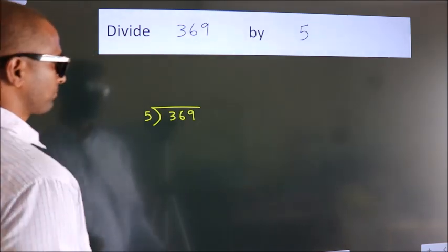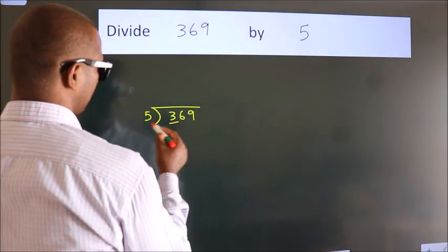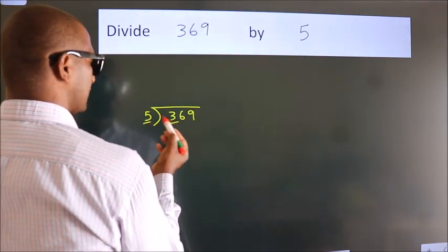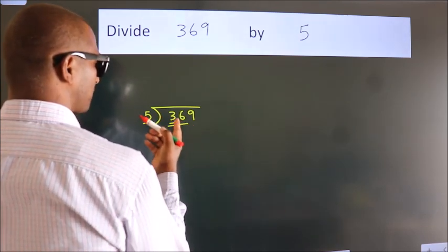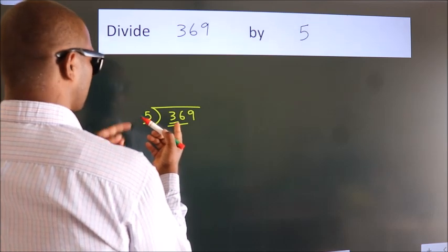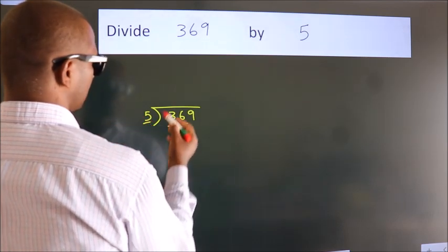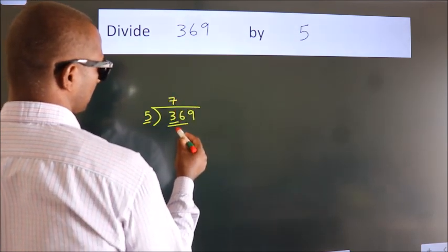Next, here we have 3, here 5. 3 is smaller than 5, so we should take two numbers, 36. A number close to 36 in the 5 table is 5 times 7 equals 35.